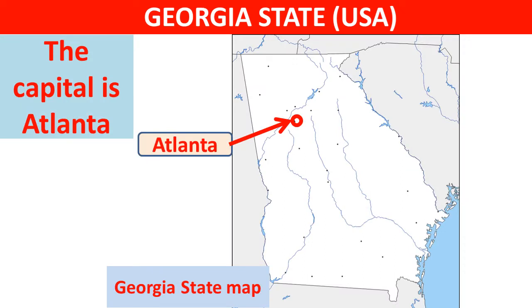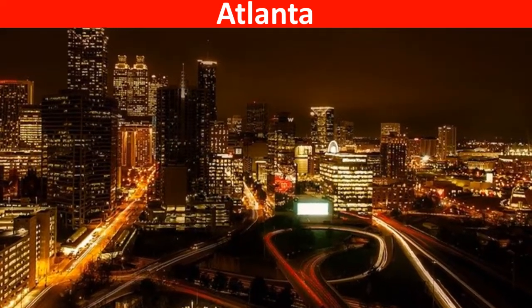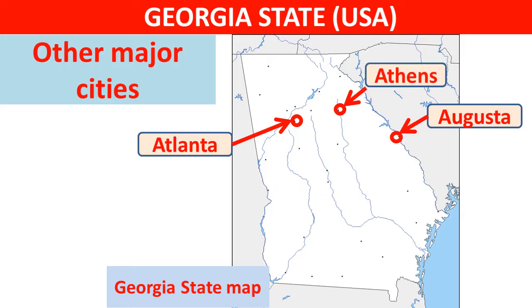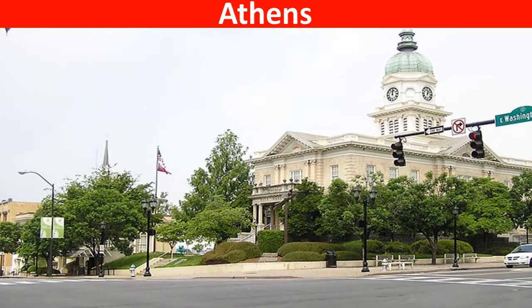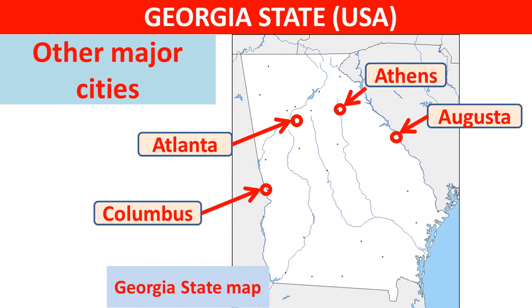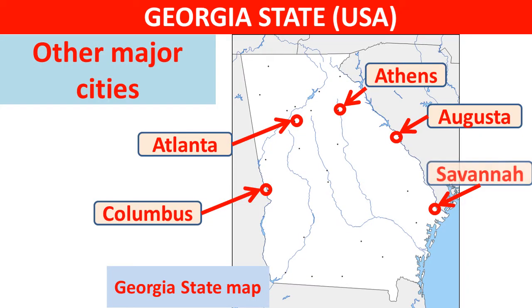The capital of Georgia is Atlanta. Other major cities include Augusta, Athens, Columbus, and Savannah.